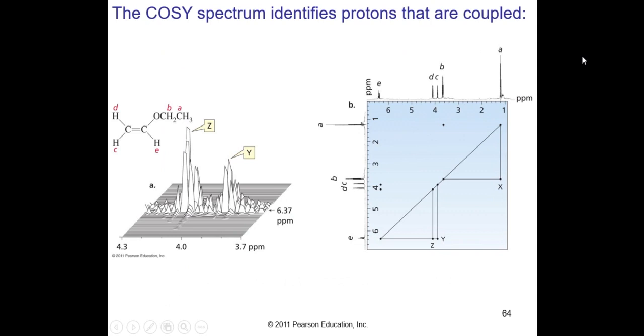This is a COSY spectrum. That will identify protons that are coupled. There is a vinyl ether, and we're seeing A, B, C, D, and E. There's your vinyls at 6.37, and this enables you to identify protons that are coupling with each other. This is a more advanced technique used in natural products analysis. Cross peaks indicate pairs of protons that are coupled.